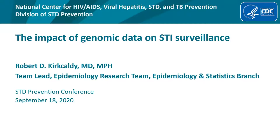Hello, here is Bob Kirkcaldy, who is a medical epidemiologist and team lead for the epidemiology research team in the Epidemiology and Statistics Branch of the Division of STD Prevention at CDC. His team conducts a broad portfolio of epidemiological studies and projects, including SURGE, the NEST study of MSM networks, managing STI outbreaks, studies of genomic epidemiology of gonorrhea, chlamydia serology, a possible gonococcal vaccine, and the prevalence of STIs in vulnerable populations. His main area of expertise is antimicrobial resistance of Neisseria gonorrhoeae. Bob, over to you.